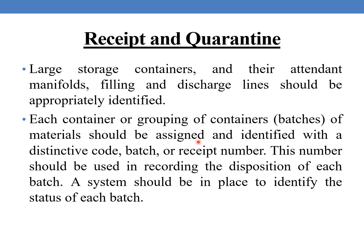Each container or grouping of containers — that is, batches of materials — should be assigned and identified with a distinctive code, batch, or receipt number. This number should be used in recording the disposition of each batch. A system should be in place to identify the status of each batch.